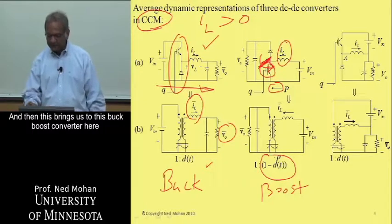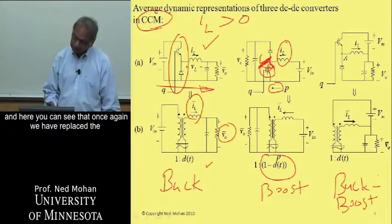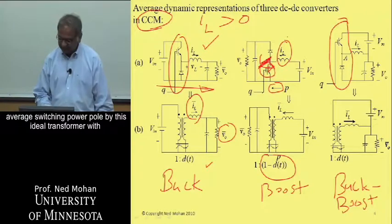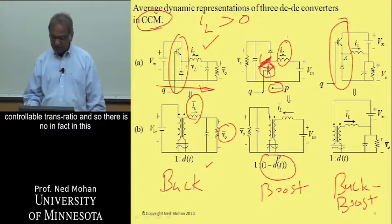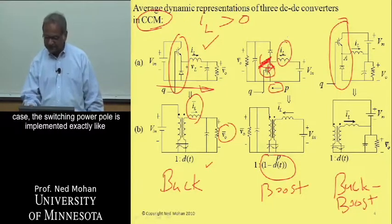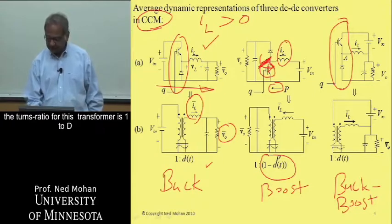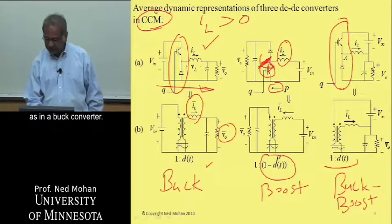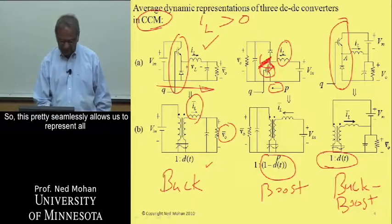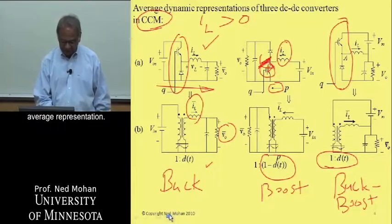For the buck-boost converter, we again replace the average switching power pole with an ideal transformer with a controllable turns ratio. In this case, the switching power pole is implemented exactly like the buck converter with the transistor on top, so the turns ratio is 1 to D as in a buck converter. This seamlessly allows us to represent all three converters by replacing the switching power pole with its average representation.